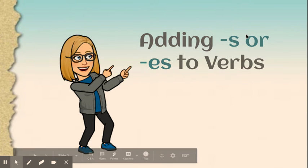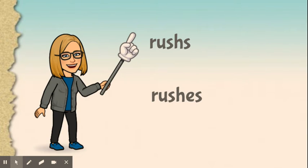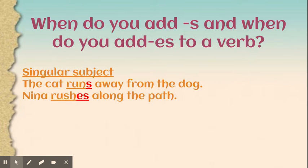Today we are going to be looking at adding -s or -es to verbs. Yesterday we talked about subject-verb agreement, and part of that was adding -s when we were looking at singular subjects and singular verbs. Now we're going to decide when we add -s or -es. So, which one is the correct way to spell 'rushes'?